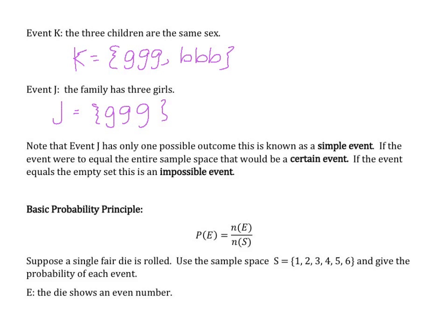Look at event J. It only has one outcome. This is known as a simple event. If the event were to equal the entire sample space, that would be a certain event. If the event equals the empty set, it's impossible to happen.